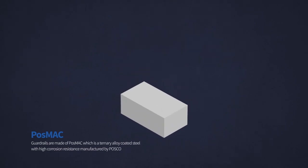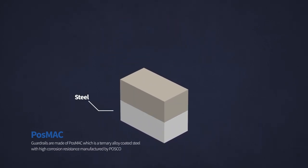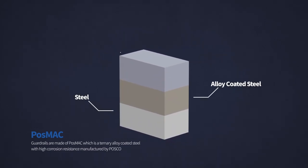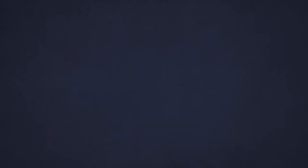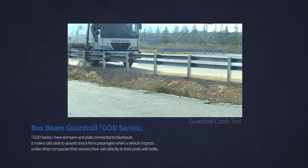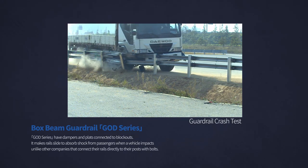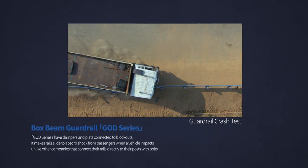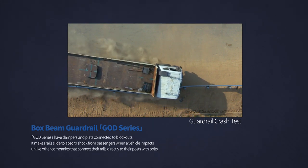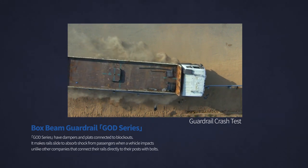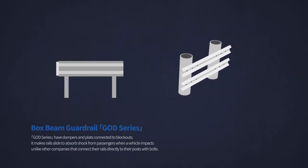Guardrails are made of post-mac, which is a ternary alloy-coated steel with high corrosion resistance manufactured by Postco. Unlike other companies, our GOD series use a different way that connects dampers and plates to blockouts. It makes rails slide to absorb shock from passengers when a vehicle impacts. Therefore, the rail sliding system can protect the passengers from the vehicle impact.